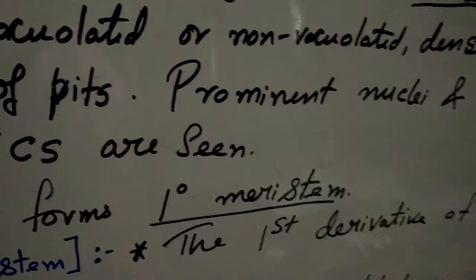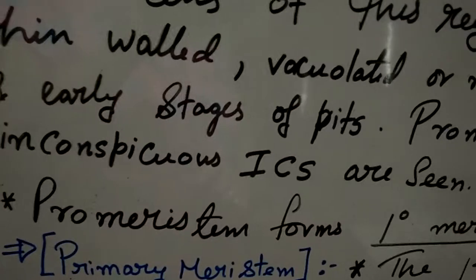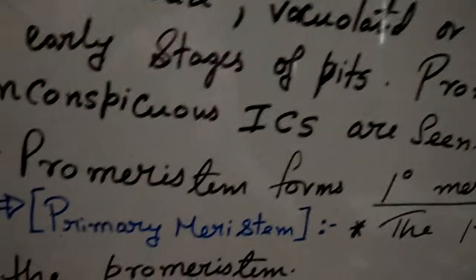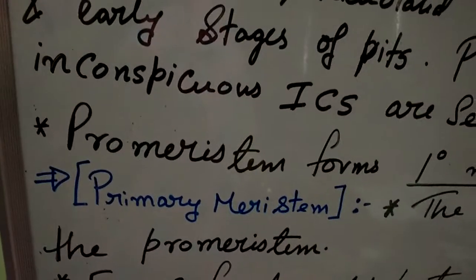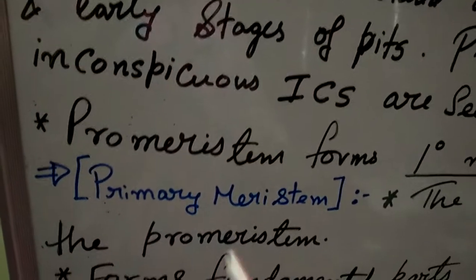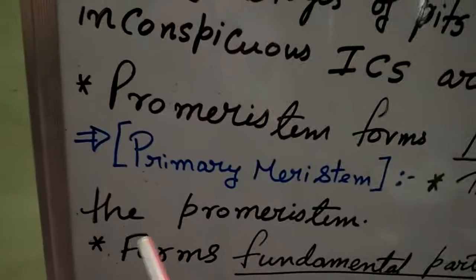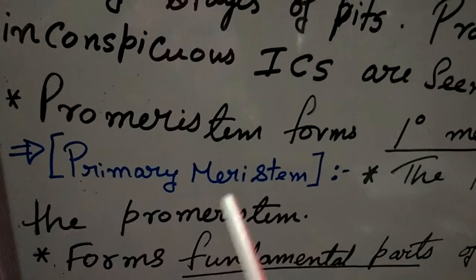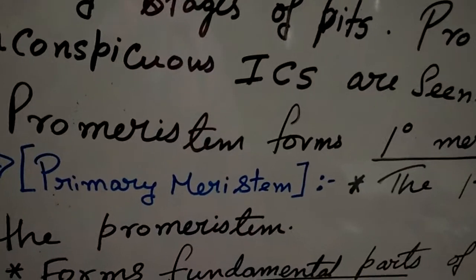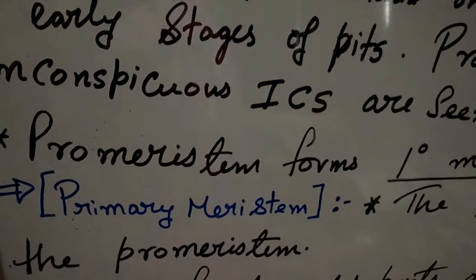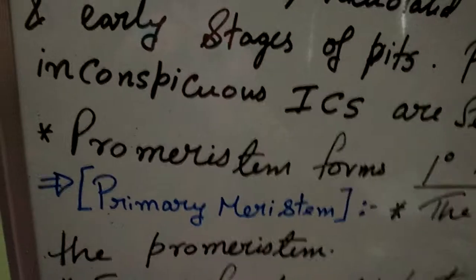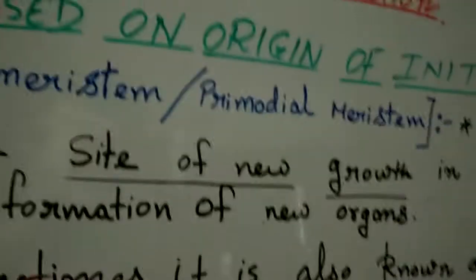Pro-meristem forms primary meristem. The second type of initiating cell is primary meristem, which is the first derivative of the pro-meristem or primordial meristem.